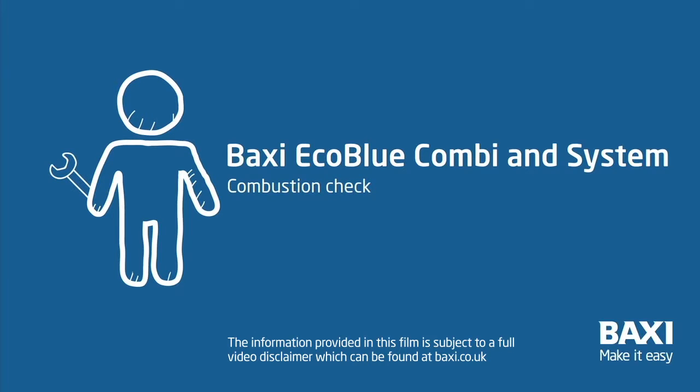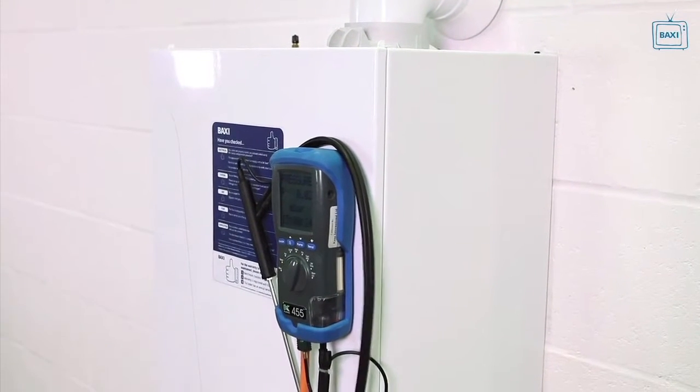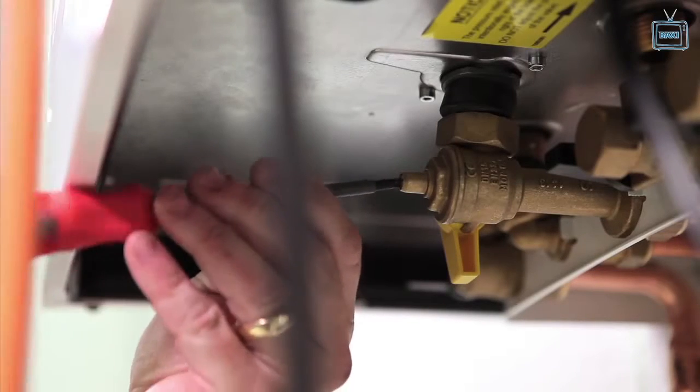Here we show you how to perform a boiler combustion check. Connect the flue gas analyzer and then set the boiler to maximum rate.